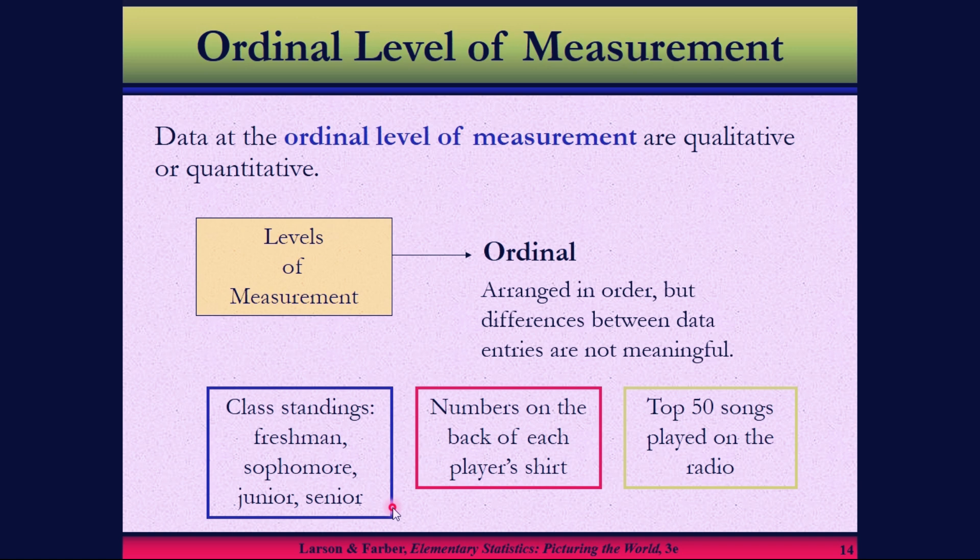The second example: numbers on the back of each player's shirts. The numbers are in order. Another example is top 50 songs played on the radio. There's a ranking, but the differences are not clear. This is what we classify under the ordinal level of measurement.